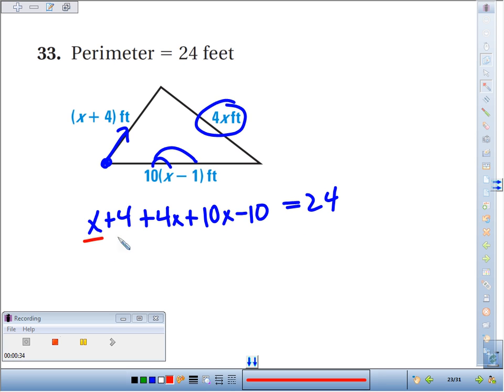Combining like terms, we've got x plus 4x makes 5x plus 10x makes 15x. And then you've got a positive 4 and a minus 10. 4 minus 10 makes negative 6 equals 24.